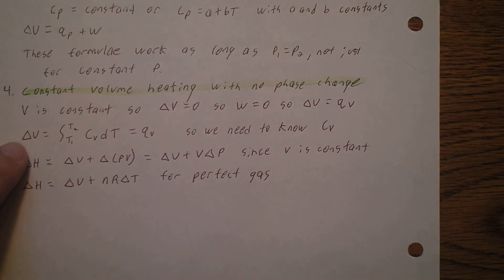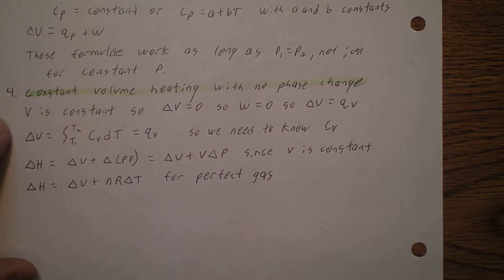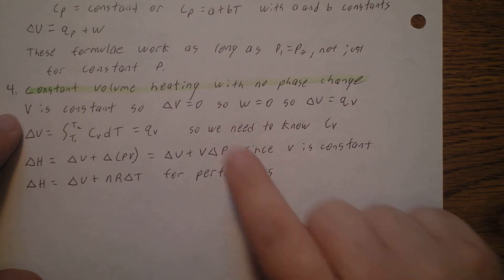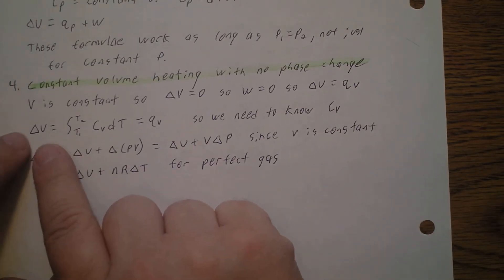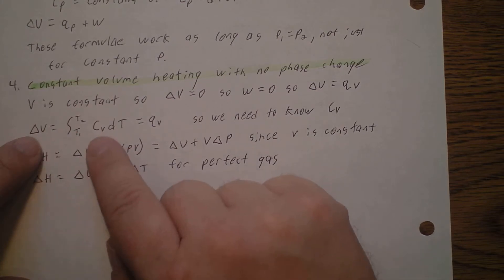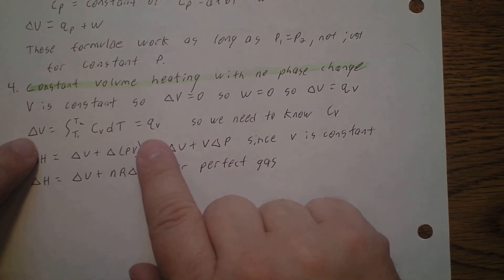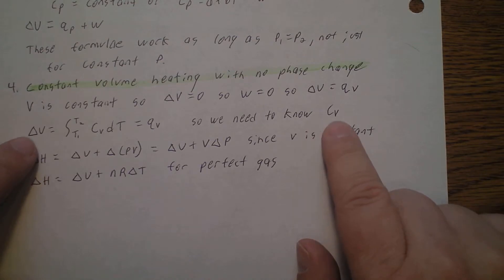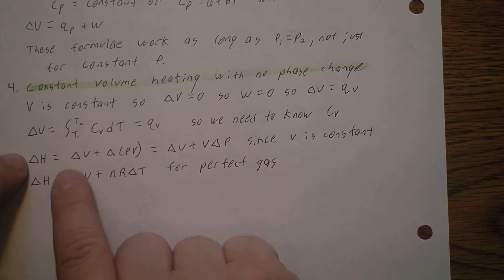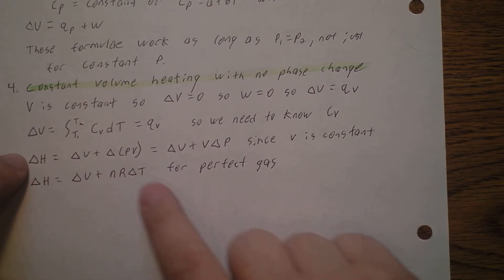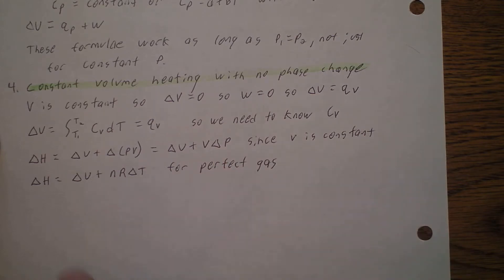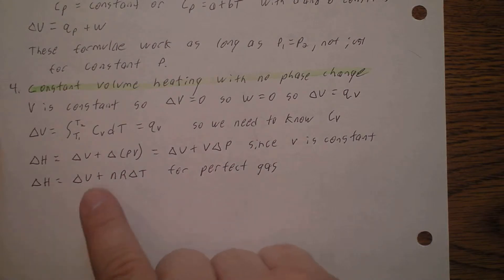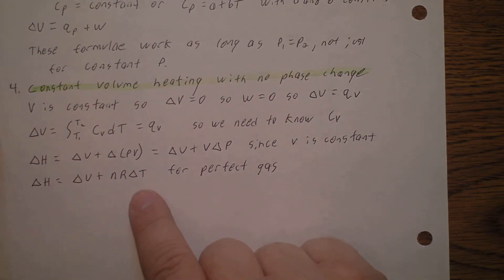The fourth process is constant volume heating with no phase change. Since volume is constant, delta V equals zero, so the work equals zero, which means the change in internal energy is just the heat at constant volume. We get delta U equal to the integral from T1 to T2 of the heat capacity at constant volume, CV, with respect to temperature. The change in enthalpy is delta U plus the change in PV. Since V is constant and delta V equals zero, this simplifies to delta U plus V times delta P, which for a perfect gas gives delta H equals delta U plus NR delta T.